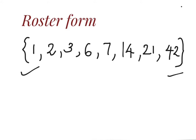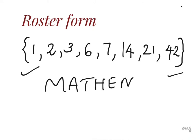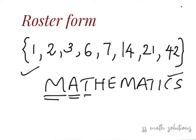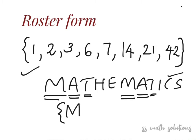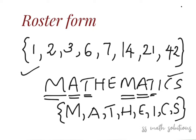In the roster form, all the elements are distinct. For example, writing the set of letters in the word 'mathematics': M, A, T, H, E, M, A, T, I, C, S — here M, A, and T are repeating. So in roster form we write each element only once: {M, A, T, H, E, I, C, S}. This is called the roster form.